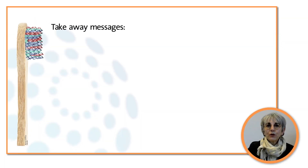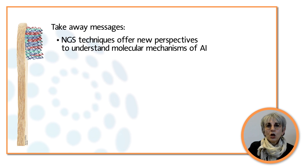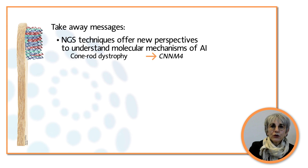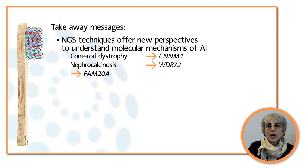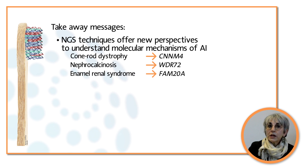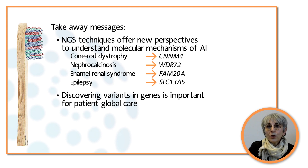Targeted next-generation sequencing panels and exome and genome sequencing offer new perspectives to understand the underlying molecular mechanisms of amelogenesis imperfecta. Discovering variants in genes involved in syndromic amelogenesis imperfecta — such as CNNM4 associated with Comel-Netherton dystrophy, BDR72 associated with nephrocalcinosis, FAM28 as the underlying cause of enamel-renal syndrome, and SLC13A5 associated with epilepsy — transformed patient global care.